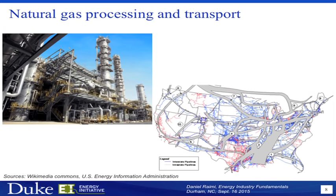Natural gas processing and transportation is pretty similar to oil, but a little simpler. Raw natural gas is transported from the well to a processing facility where one component — primarily methane, which is mostly used to generate electricity and used in your home for your stove — is separated from other natural gas molecules like propane or butane. Butane you'll find in a lighter; propane you'll find in a gas grill. Those products are separated out at a processing plant, transported separately, and sold separately — but they're all different types of natural gas.